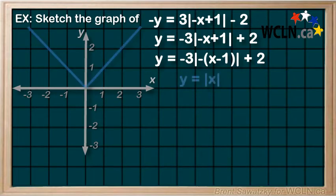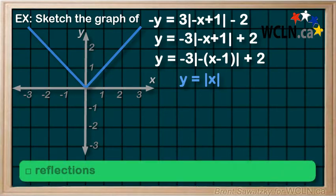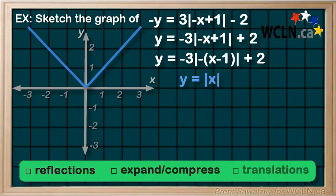And we start with our base absolute and go from there. And next we consider the order of our transformations. Reflections, expansions and compressions, and then our translations.